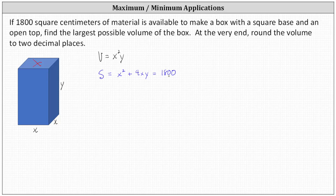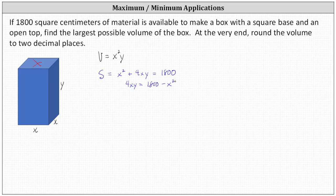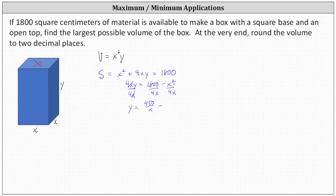To maximize the volume, we'll write the volume formula in terms of one variable. We'll solve the constraint for y and substitute into the volume formula. Subtracting x squared from both sides gives us 4xy equals 1,800 minus x squared. Dividing both sides by 4x, we get y equals 450 divided by x, minus x divided by 4.